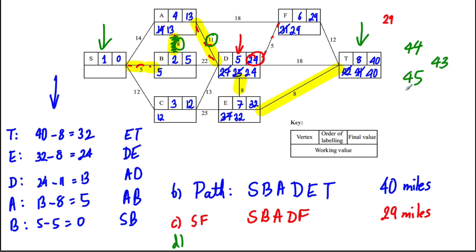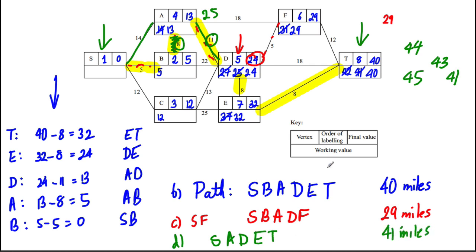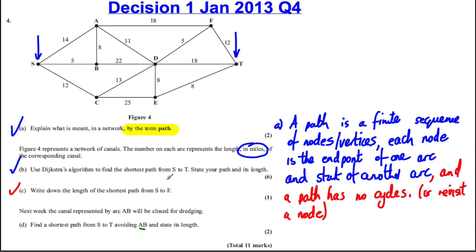The clever option is S→A (14) then A→D (11) = 25, versus the previous route which adds up to 24 — so we're only adding one extra mile. That gives a total of 41 miles. The path is S → A → D → E → T = 41 miles. The only way to solve these is by trial and error, checking all options for the smallest total. We've avoided AB and the answer is 41 miles.